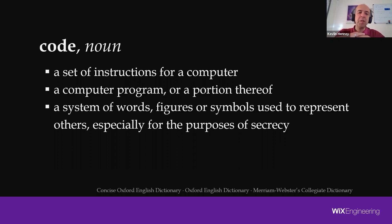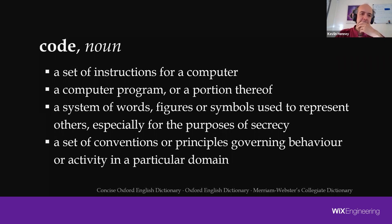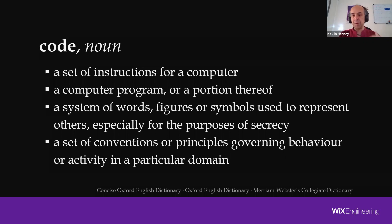This is sometimes true of the code we write — particularly what we refer to as legacy code, also listed under the heading of technical debt. This code keeps its secrets very close to its chest, and this is the kind of code we'd like to avoid. But here's another meaning: code as a set of conventions or principles governing behavior in a particular domain. We are guided by codes of practice and codes of conduct, and a development process is effectively a code.